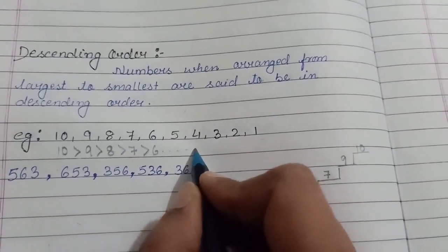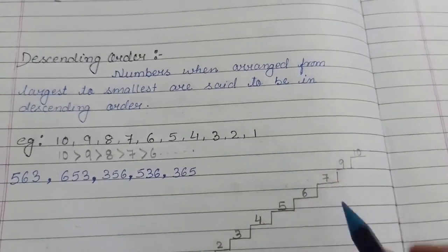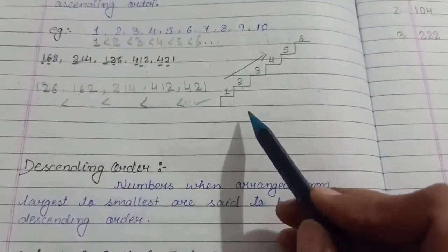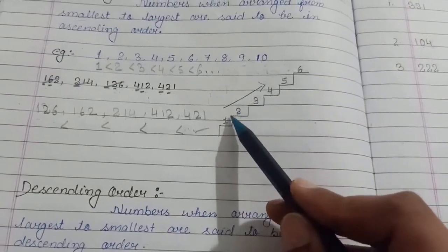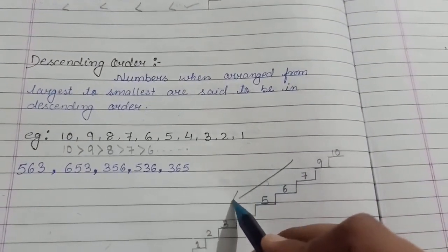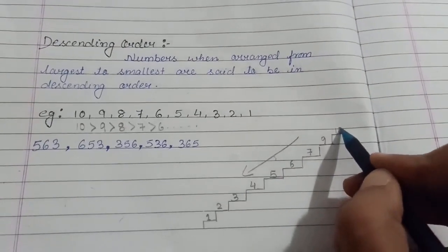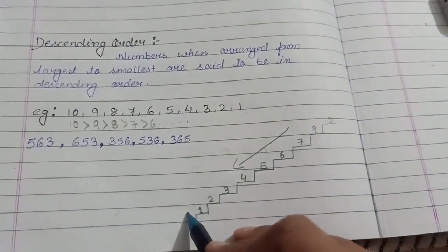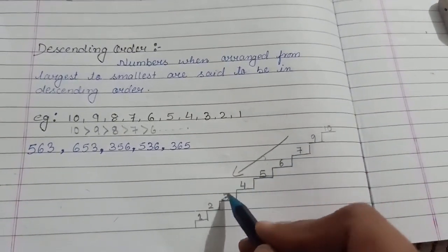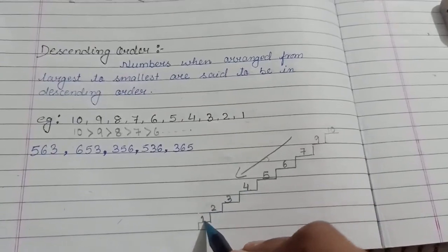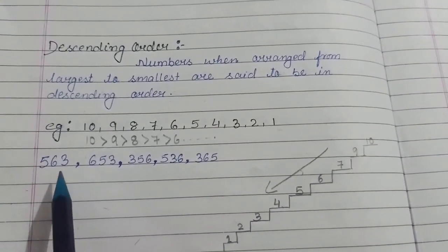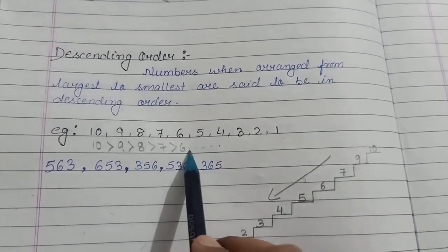What does descending mean? Descending means going down. Ascending means going up and descending means going down — from up to down. And the sequence goes: 10, 9, 7, 6, 5, 4, 3, 2, 1. Now we will arrange three-digit numbers in this sequence.